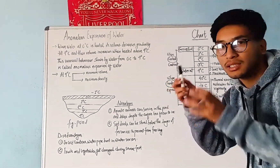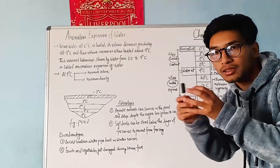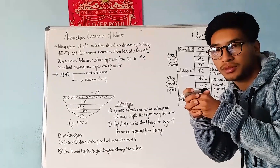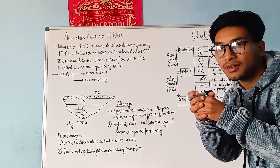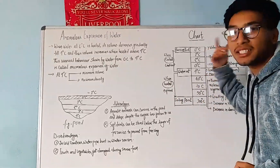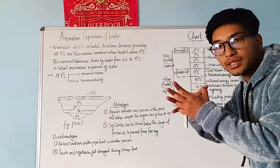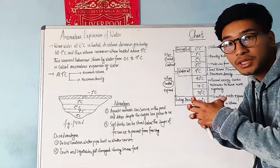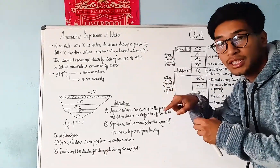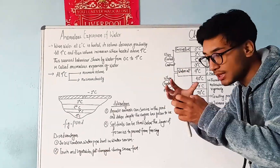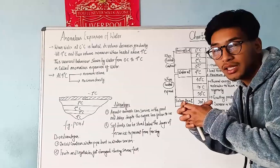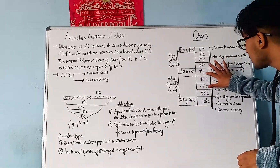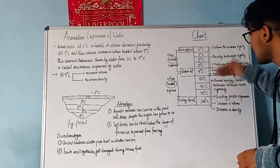Water molecules contract and shrink. The water molecules form a compact, stronger liquid structure. As temperature decreases toward 0 degrees Celsius, the molecules form stronger bonds, becoming compact like a solid.